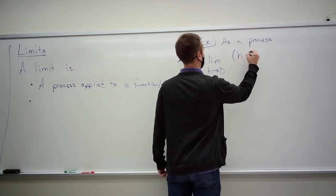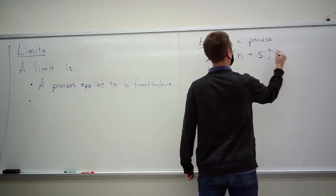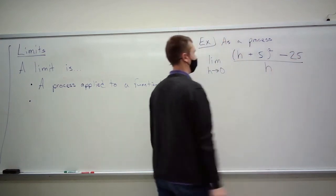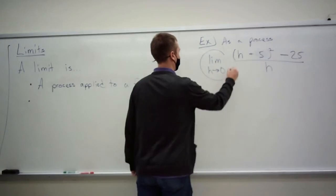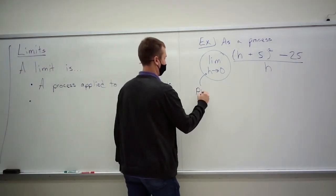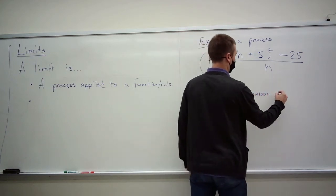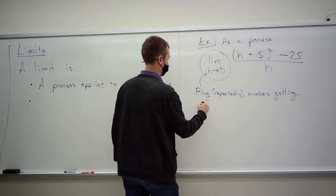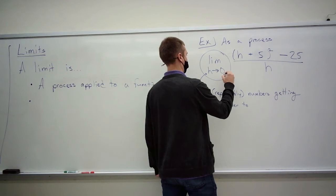Without giving anything away, I could give you any sort of rule — an expression, something that you can compute given a number. And you should be able to perform this process. That process is described right here, specifically on that bottom part. The process means plug in repeatedly numbers getting closer and closer to this value.